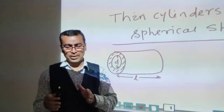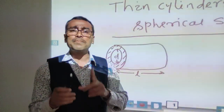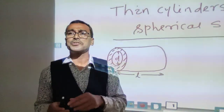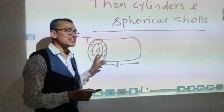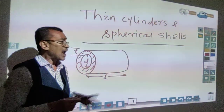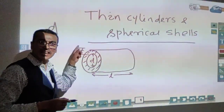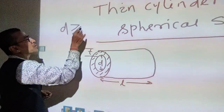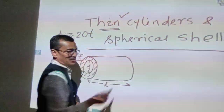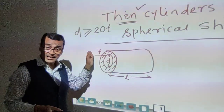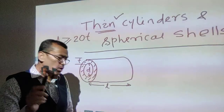The mechanism to divide cylinders into thin and thick types is simply by taking two parameters of the cylinder: one is the thickness, and the other is the internal diameter. The relationship is that if the internal diameter of the vessel is greater than or equal to 20 times the thickness of the vessel, then it is called a thin cylinder. Otherwise, if it is less than that, then it is called a thick cylinder.